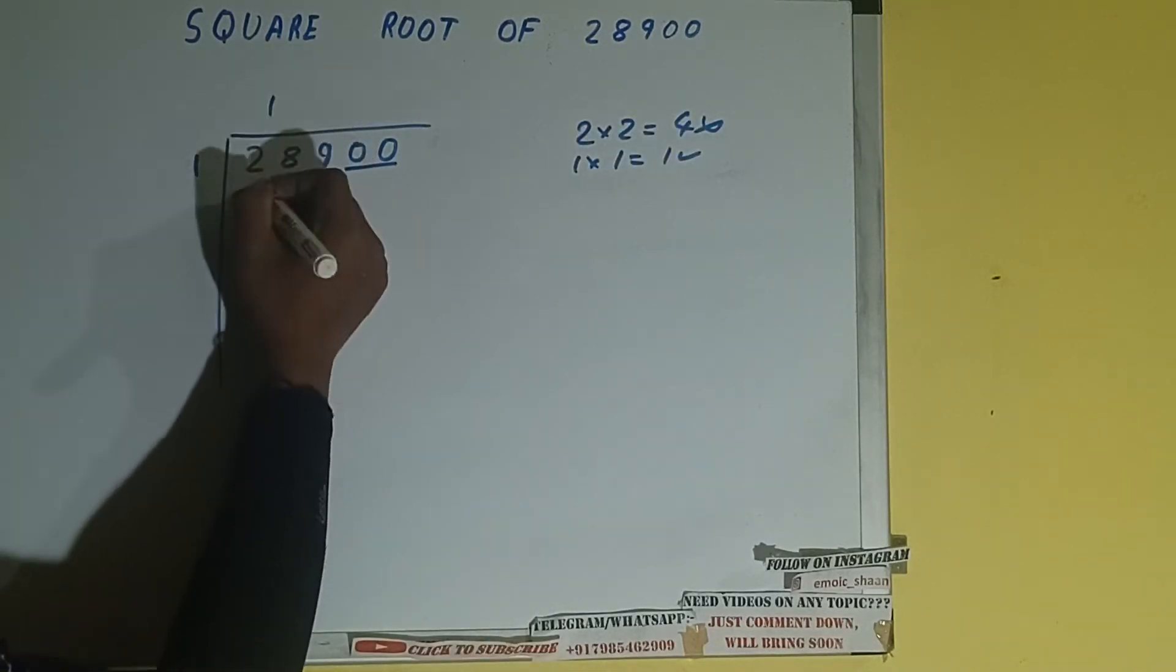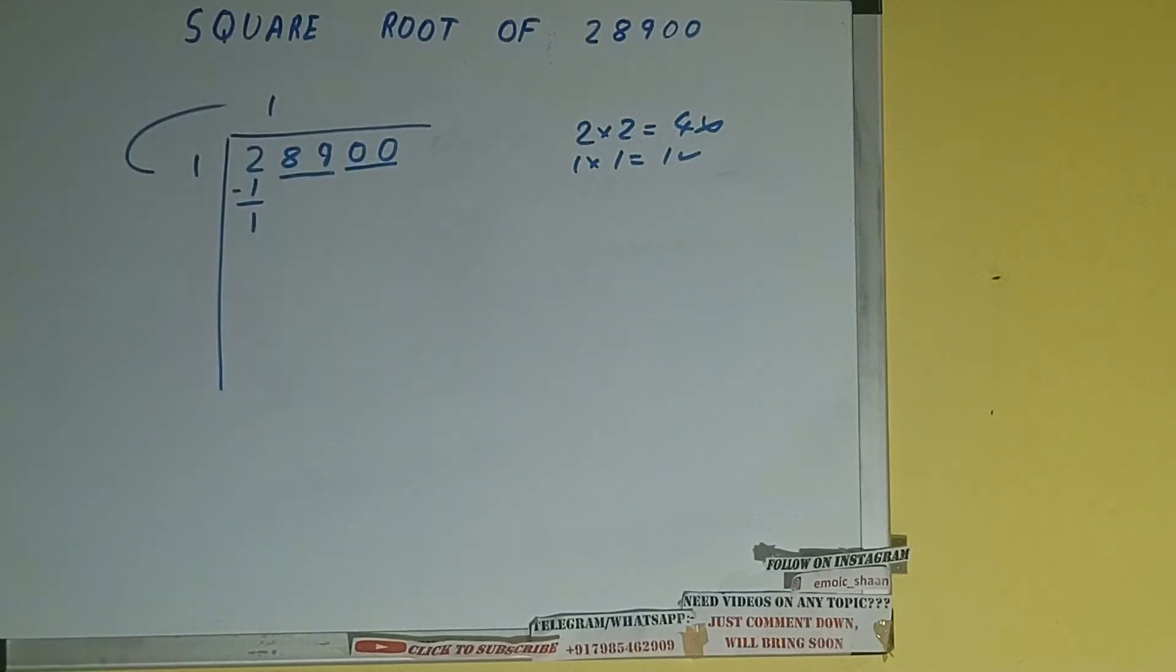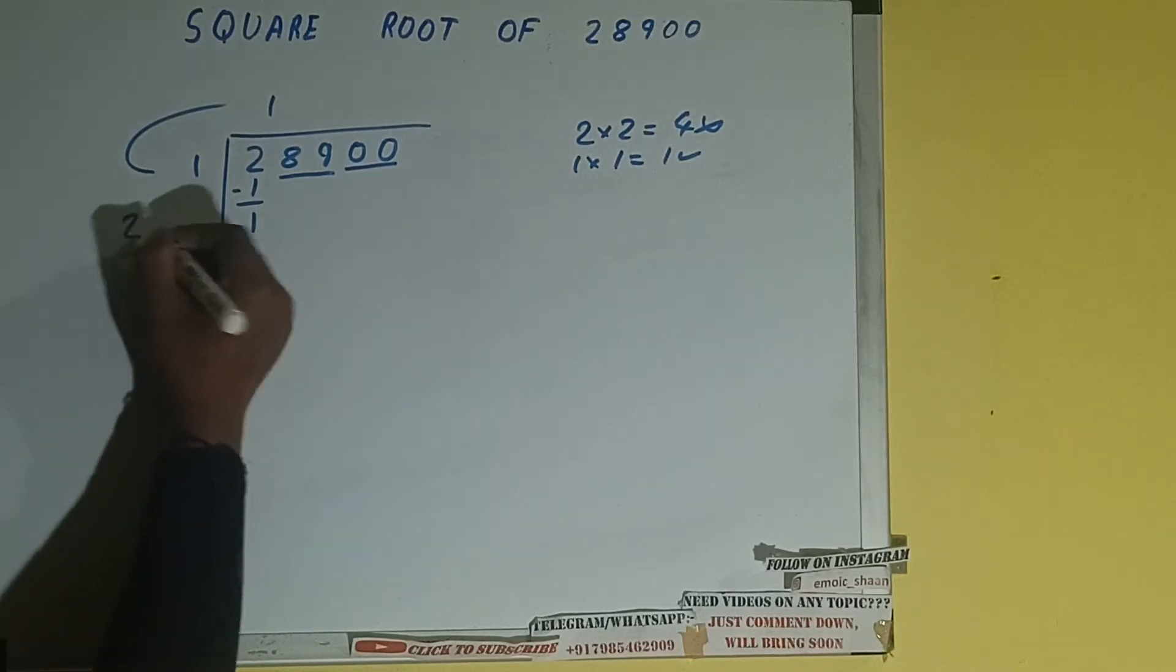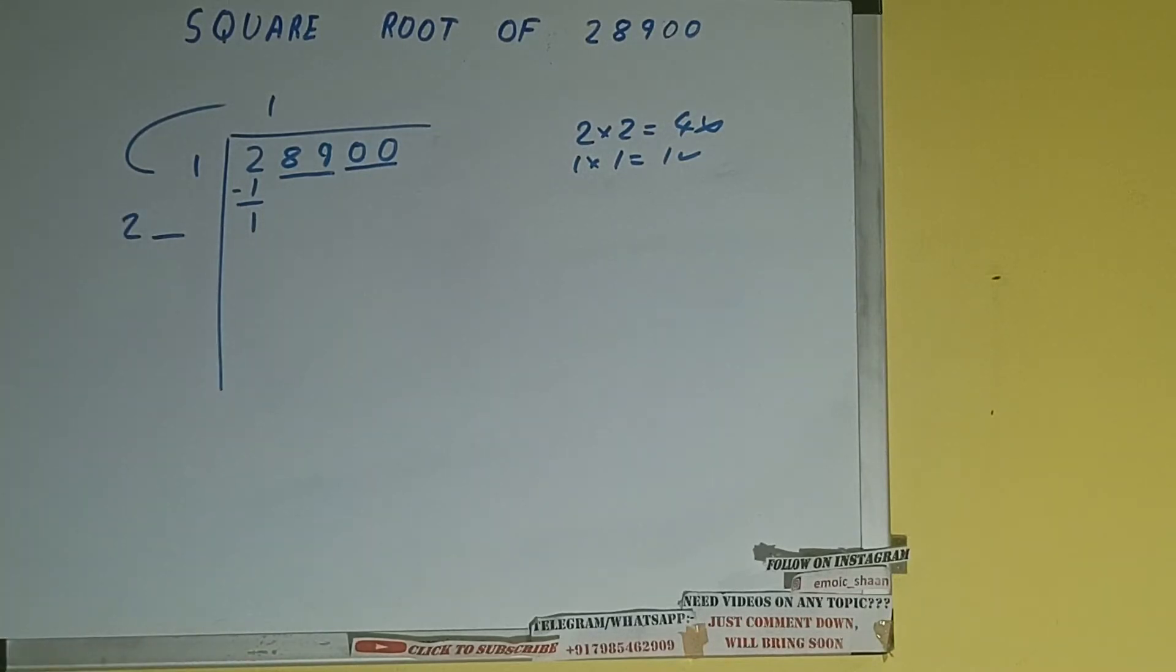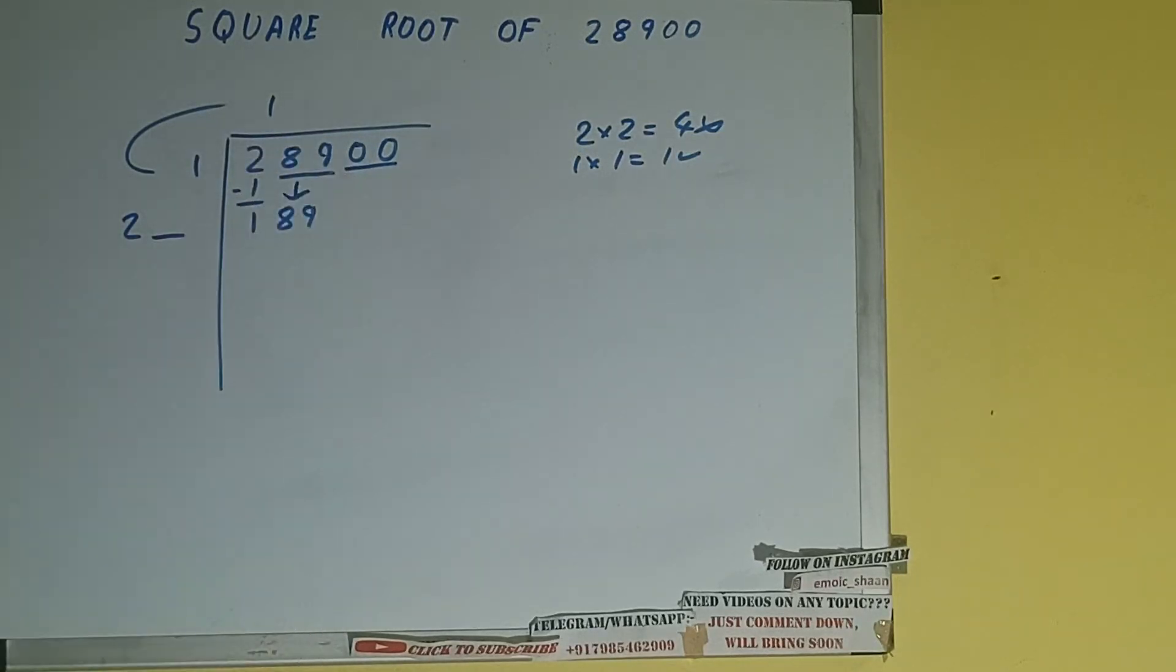So one here and one here. One subtract one will be left. We did one into one. So add both: one plus one will be two. Write it here and keep a digit extra. And this number we need to make it big. So bring the next pair down and it will be 189.